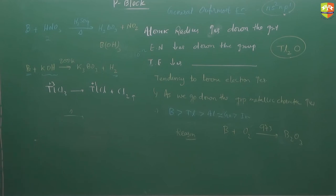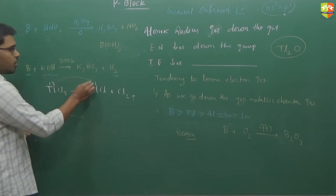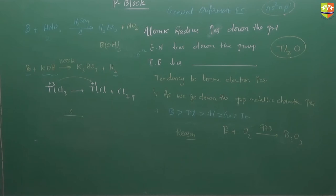Tl3+ has tendency to convert into Tl+, so it is going under reduction. Reduction means it is a good oxidizing agent. So this conversion is possible because of the oxidizing nature of Tl3+.